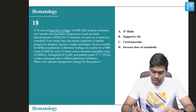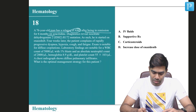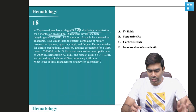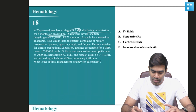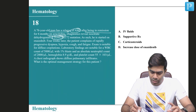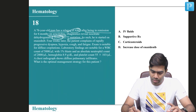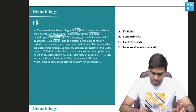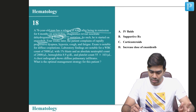Here is a 76-year-old man with a relapse of AML after being in remission with six months of azacitidine. Diagnostics reveal the patient has an IDH2 mutation, for which he was started on enasidenib.